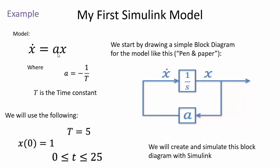We need to enter the model parameters: a equals minus 1 over T, where T is the time constant of the system. The initial value equals 1, and we want to simulate from t=0 to 25 seconds. Let's go to Simulink and create this mathematical model.